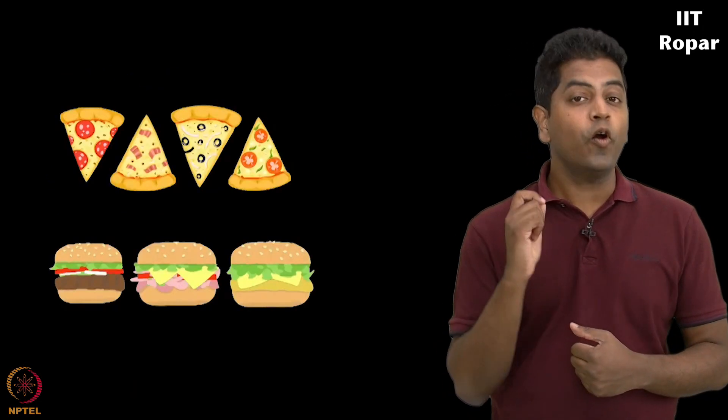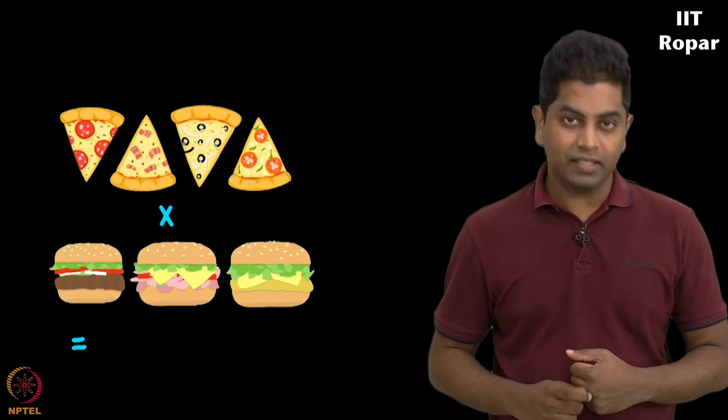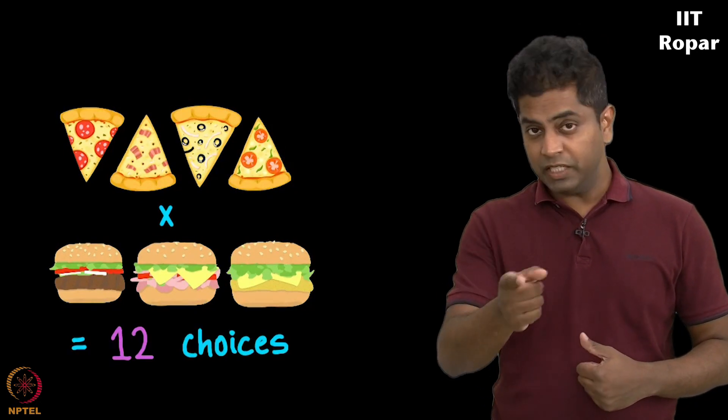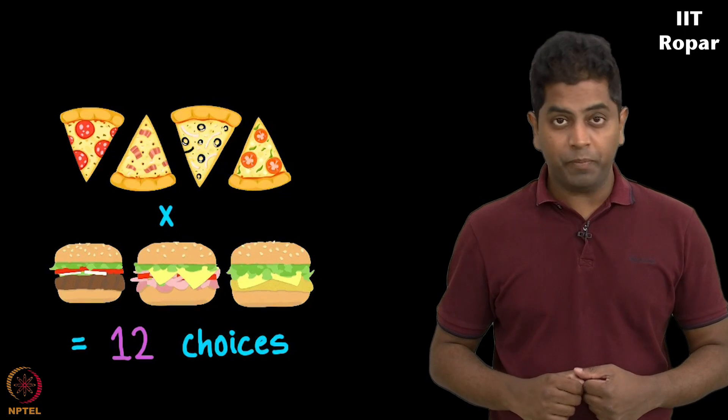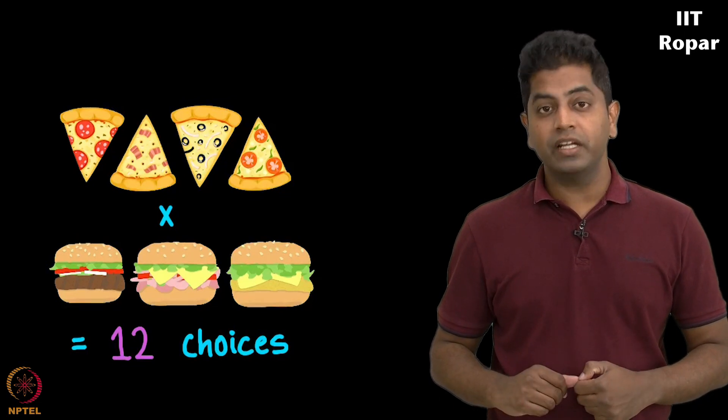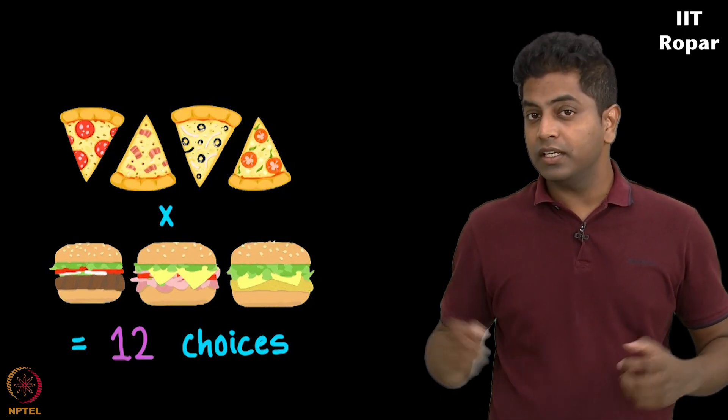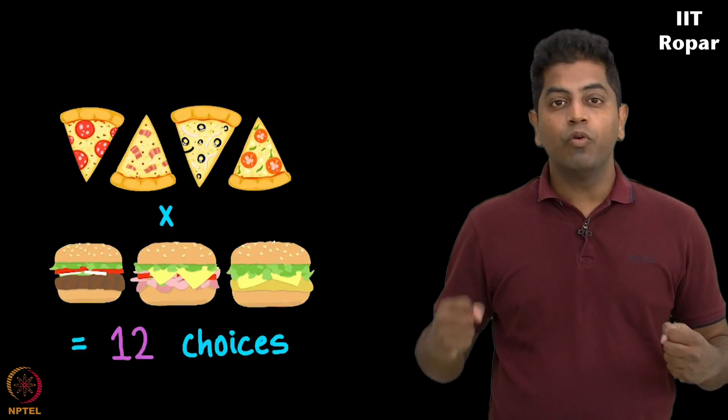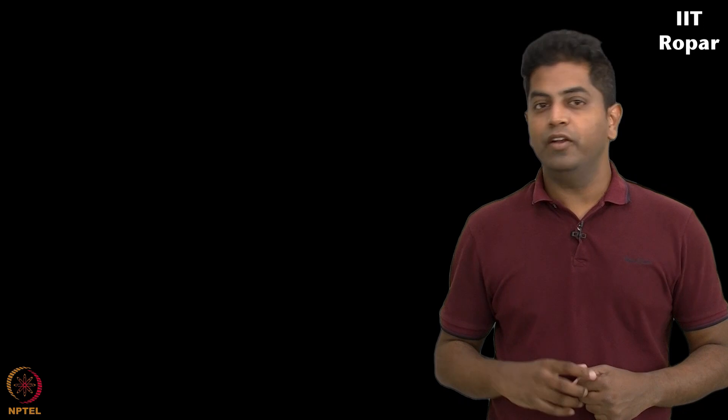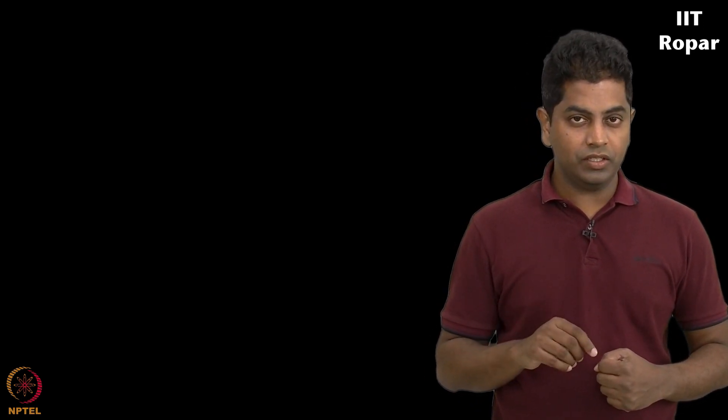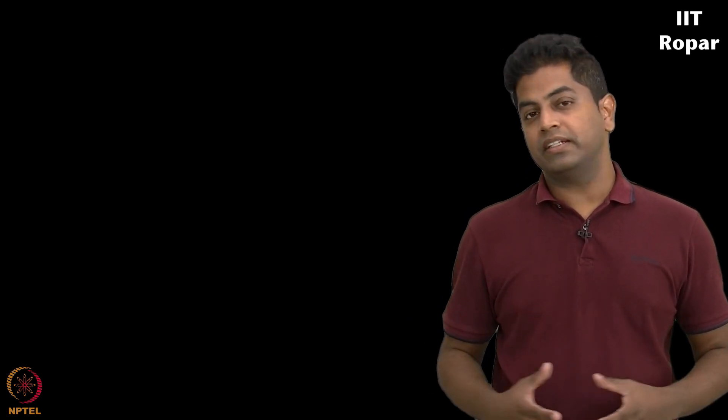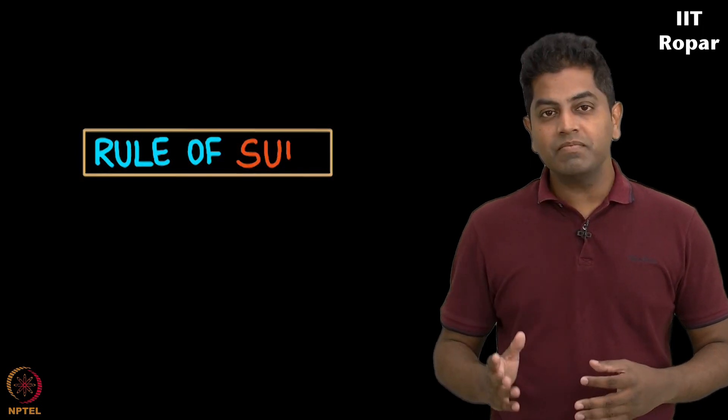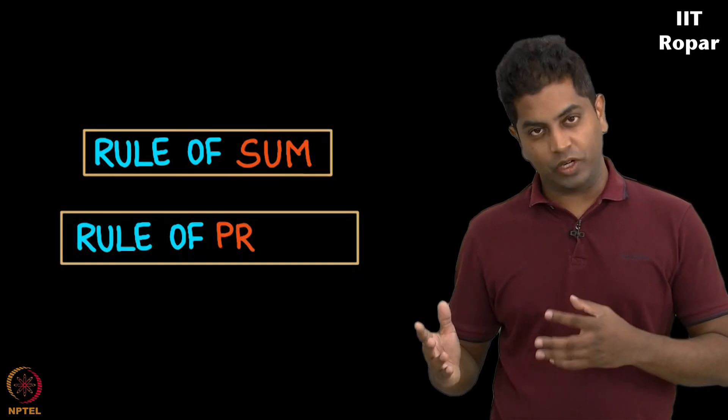Clearly, it is four times three. Please remember the last time it was four plus three. This time it is four into three. So it is only common sense to know when to add and when to multiply. Previous case was addition, this case was multiplication. This goes by the title the rule of sum and rule of products.